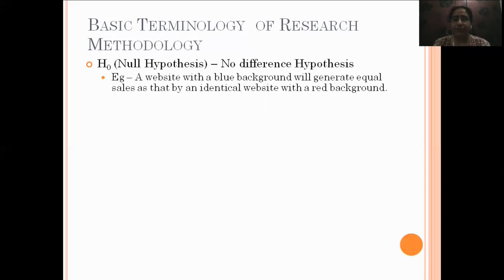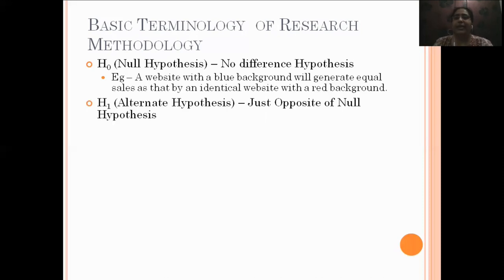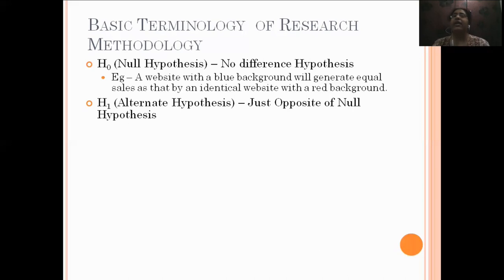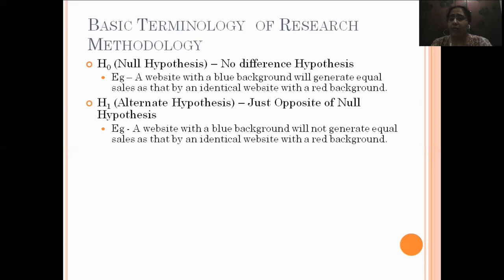The other hypothesis, just opposite to the null hypothesis, is the alternate hypothesis, which is normally denoted by H1 or HA. The alternate hypothesis is just opposite to the null hypothesis. So in the previous example, if we had taken that there is no difference, the alternate will be that there is a difference. The difference can be that the blue background website might generate a higher sale or it might generate a lower sale. So we can write: a website with a blue background will not generate equal sales as that by an identical website with a red background. It will not produce equal sales — there is a difference. So this is the alternate hypothesis.